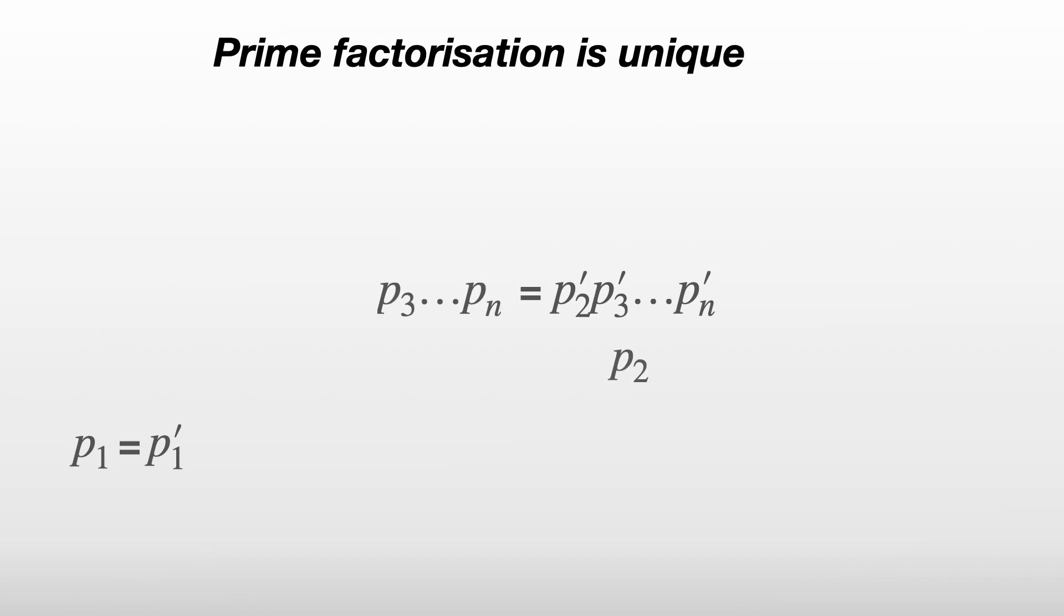We now do the same thing with p2. We'll bring it over to the right hand side. And now, like before, this is an integer. So one of the p2' to pn' must equal p2. And like before, we'll just say that it's p2' just to make things easier. So p1 equals p1', p2 equals p2'.